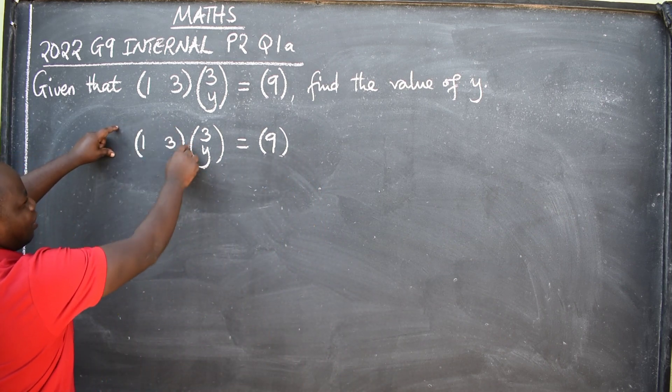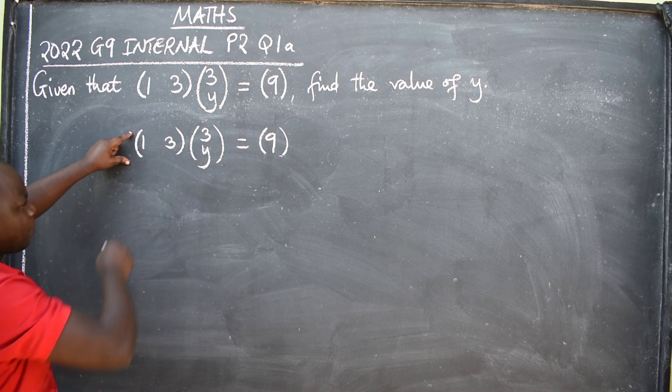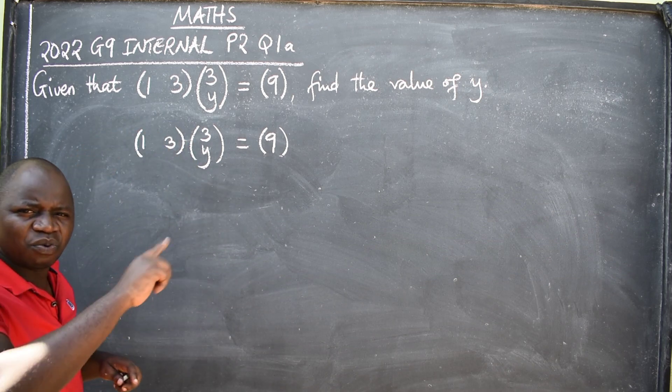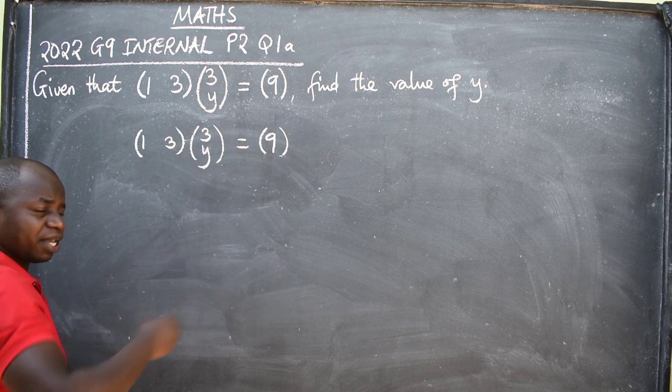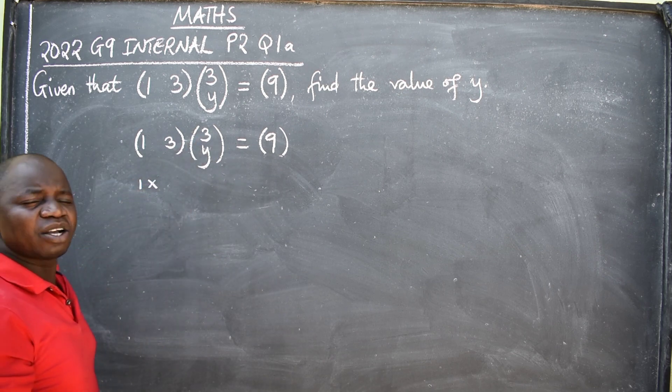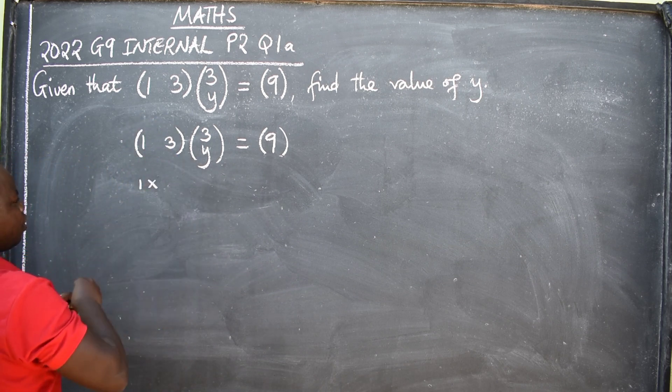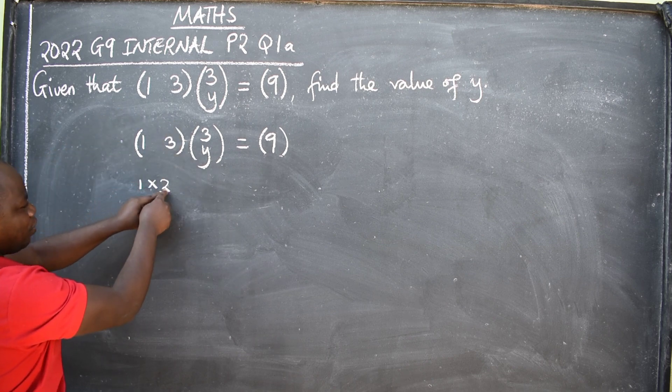So, look at this matrix that we have here. How many rows are here? One. Only one. If these are rows, then these are columns. So, we only have one row. So, we are going to say one by, how many columns do we have? One, two. So, we have two. So, the order of this matrix is one by two.